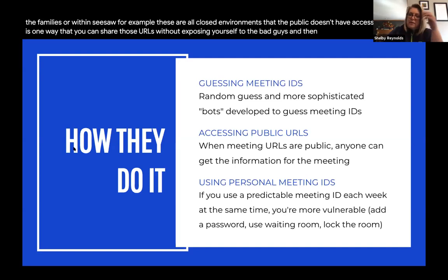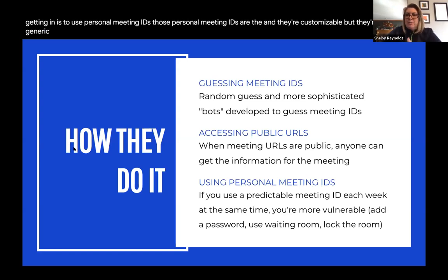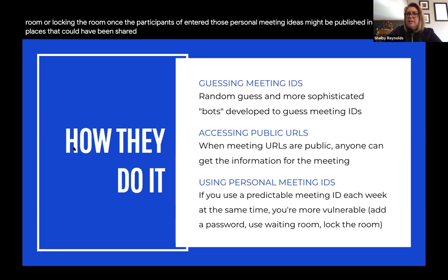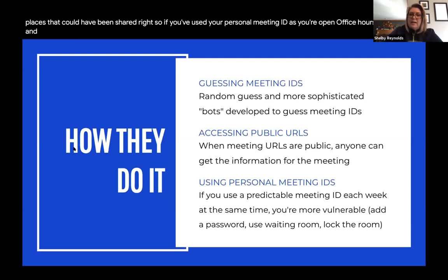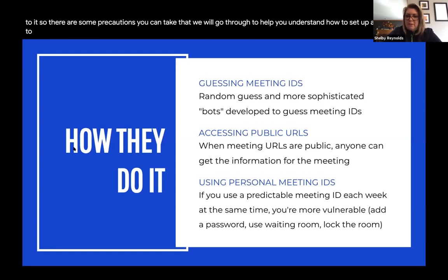Another way people get in is through personal meeting IDs. Personal meeting IDs are the generic anytime room created within your account. If you don't take precautions like using the waiting room, setting a password, or locking the room once participants have entered, those personal meeting IDs might be shared in places where unauthorized people could access them. We'll go through how to set up a password, use the waiting room, and lock the room.